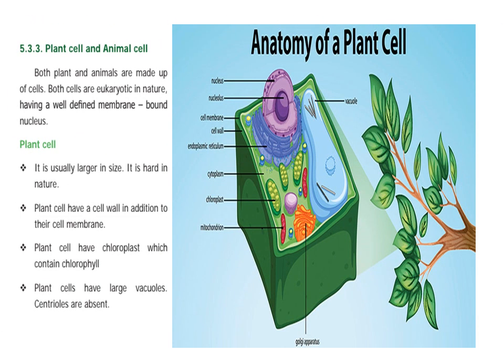Now the plant cell — the first cell type is eukaryotic or prokaryotic. Both prokaryotic and eukaryotic are very important. Plant cell and animal cell — both plants and animals are made up of cells.